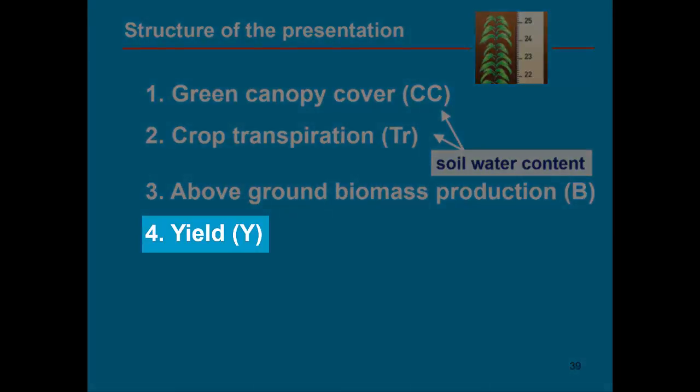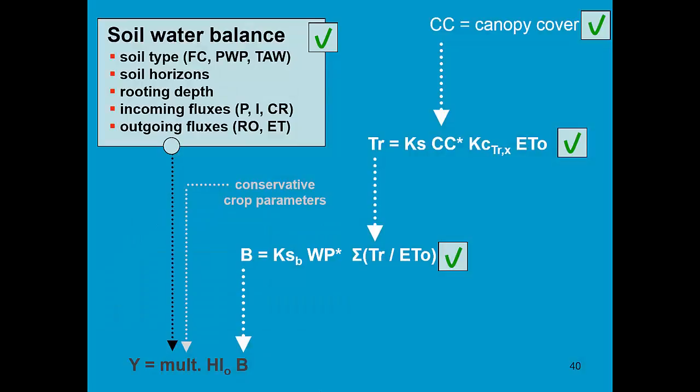The final check is for the yield. So far we have checked the canopy cover, the soil water balance, the transpiration, and the simulated biomass. Yield is obtained by multiplying the simulated biomass with a reference harvest index and a multiplier.